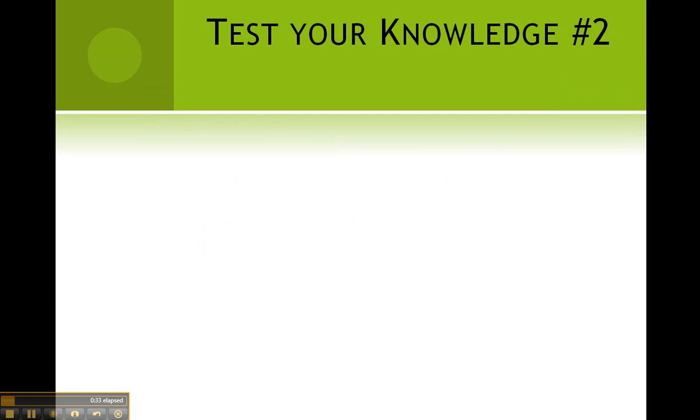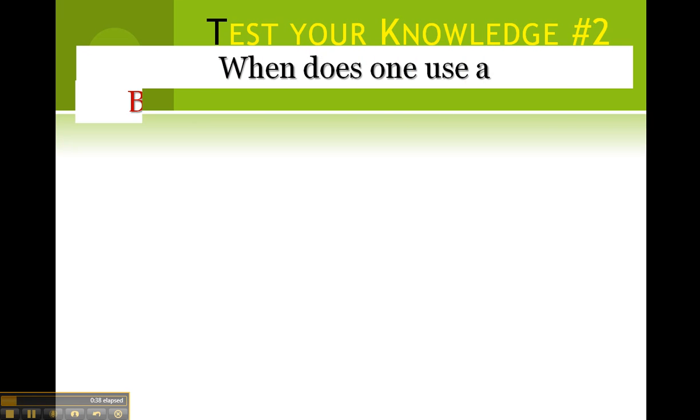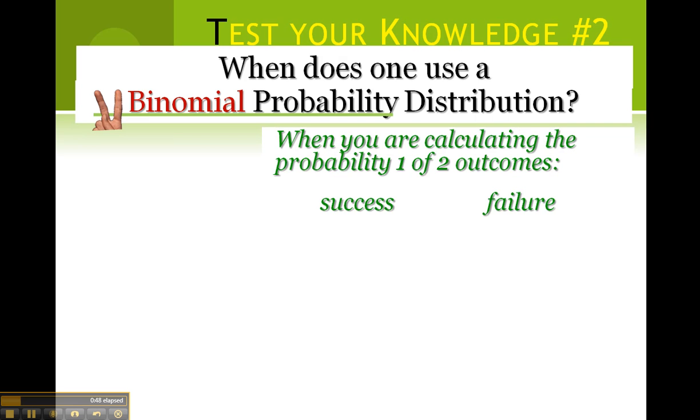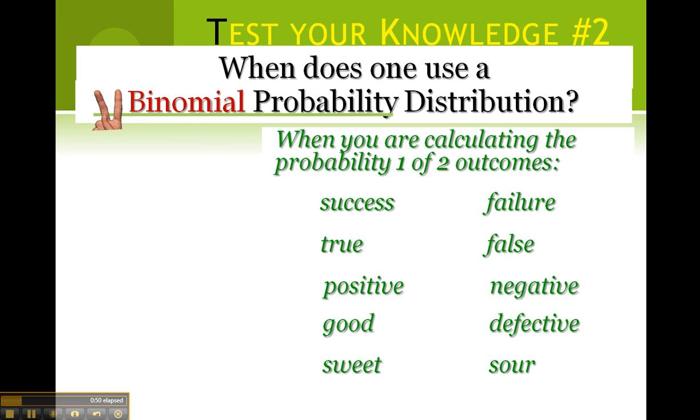Ready? Let's test your knowledge again. When does one use a binomial probability distribution? When you are calculating the probability of one of two outcomes, typically success or failure.